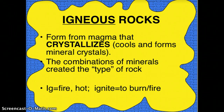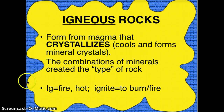Igneous rocks form from magma that crystallizes, which means the magma or lava cools and forms mineral crystals. Sometimes you can see those crystals because they're big; other times you cannot. The word igneous comes from 'ig,' meaning fire or hot, like to ignite something.